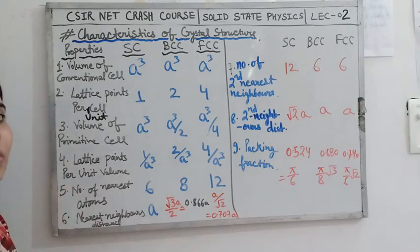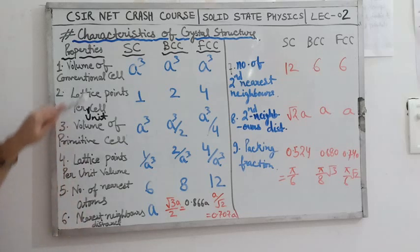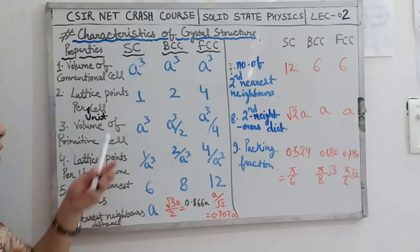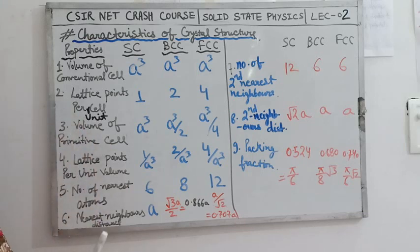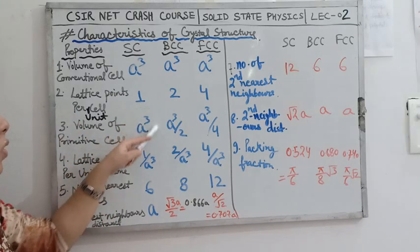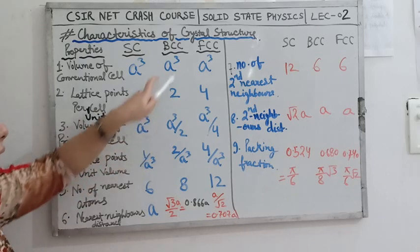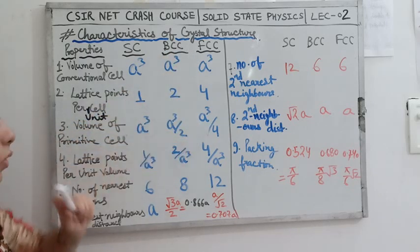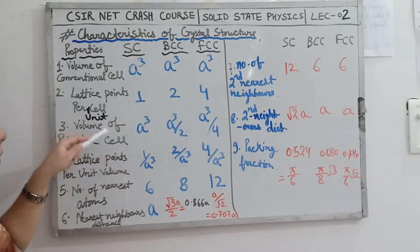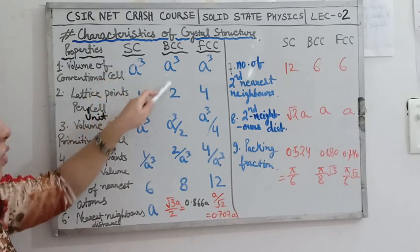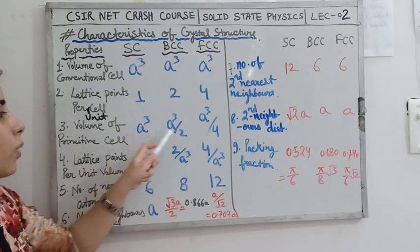The next property is the volume of the primitive cell. A primitive cell is one in which there is only one effective number of atoms. In simple cubic the volume of the primitive cell is A cube. In body centered cubic it is A cube upon 2, and in face centered cubic it is A cube upon 4. You can find these values by taking the ratio of conventional cell volume to lattice points per unit cell.